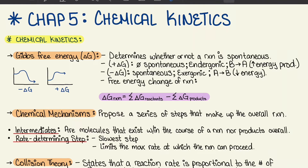Welcome back to General Chemistry, Chapter 5, Chemical Kinetics. We're going to start with section 5.1, where we talk about chemical kinetics, beginning with Gibbs free energy, which is shown with a delta G.